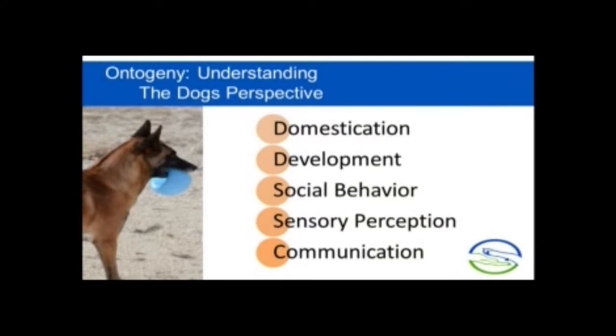With ontogeny, what I'm going to go through today is domestication. We'll look at the domestication of the dog and compare and contrast that domestication with other species. We're going to look at developmental periods of dogs and what can go wrong with those developmental periods. I'll talk about social behavior of dogs, their sensory perception — they obviously see the world much differently than we do — and we'll make some comparisons to humans as well. And then we're going to look at canine communication.